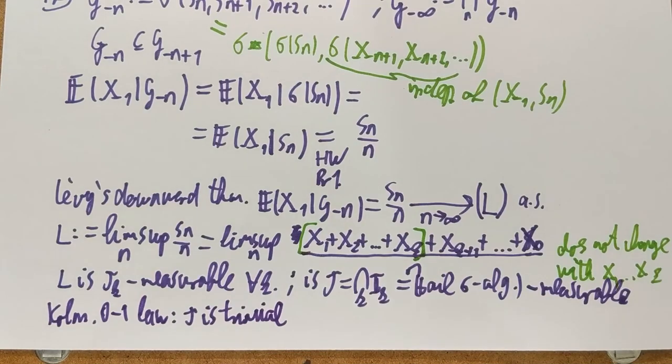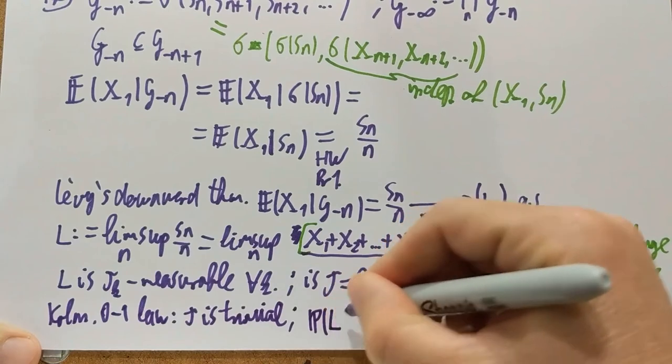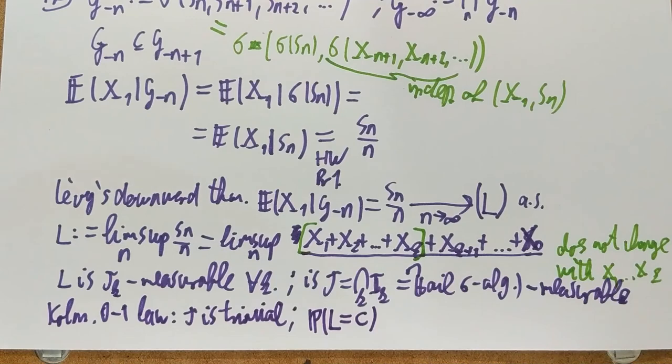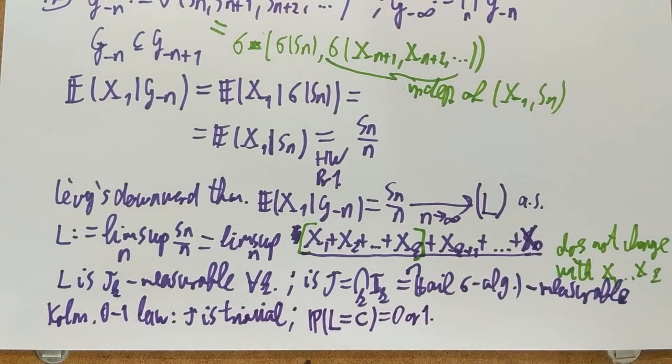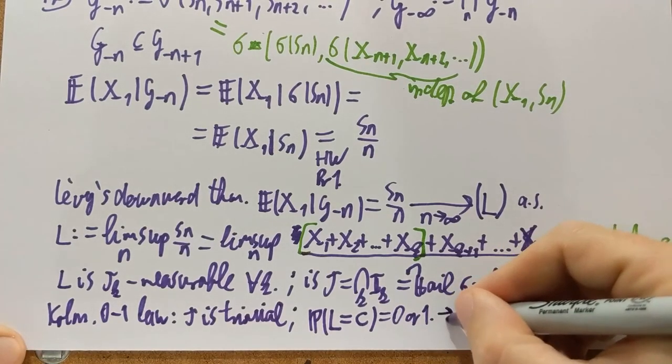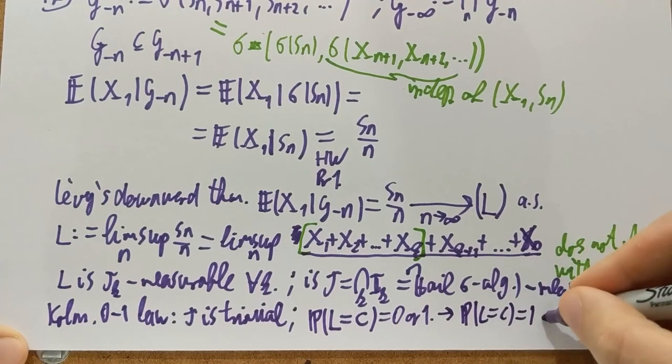So it follows that if I ask about the probability that L, this random variable, is a constant C. C is a non-random constant. This probability must be 0 or 1. This thing is 0 or 1. It must be 1 for some value of C. Right? Because I have L, the random variable, it can't be 0 everywhere. So it must be 1 for some value of C. So it follows that P(L = C) is 1 for some C.